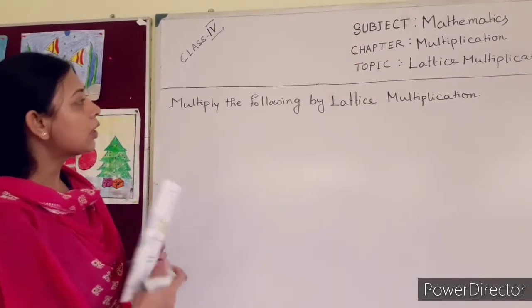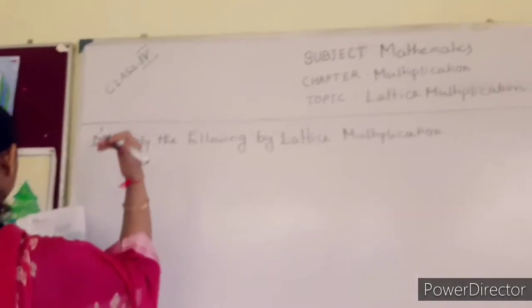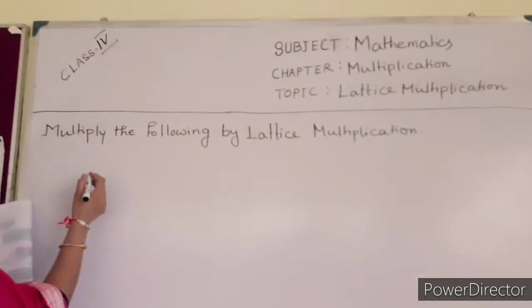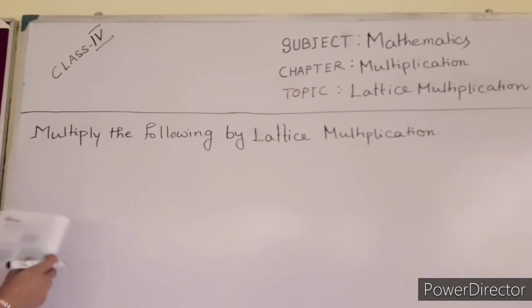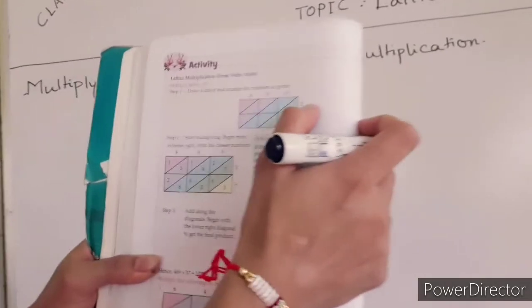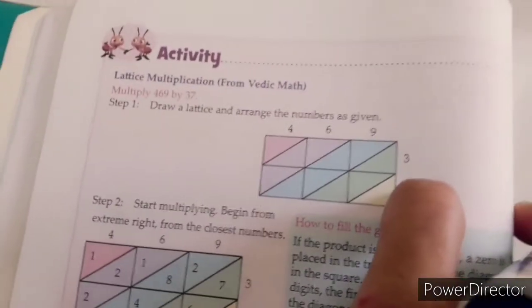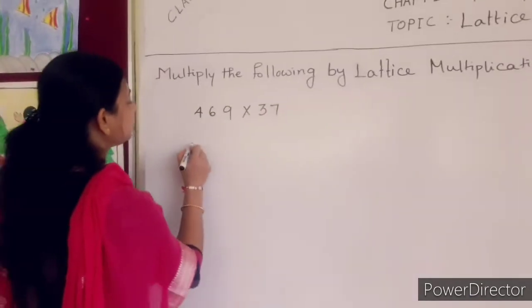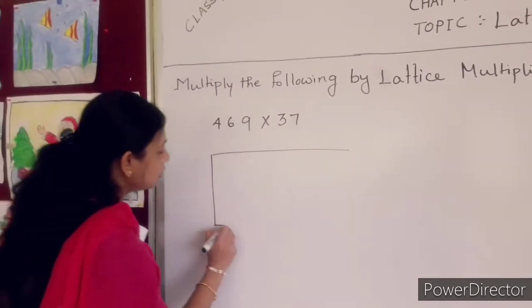Now according to your book you have to draw a lattice. Draw a lattice as the number. Suppose I am taking a number — in your book there are 469 and 37. This one I am doing now. Multiply the following using lattice multiplication: 469 into 37.